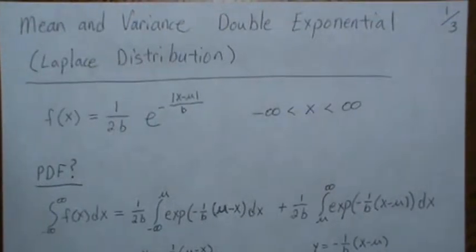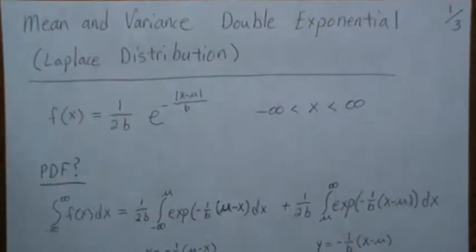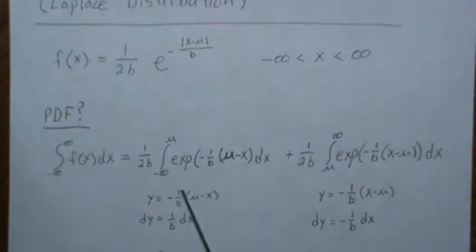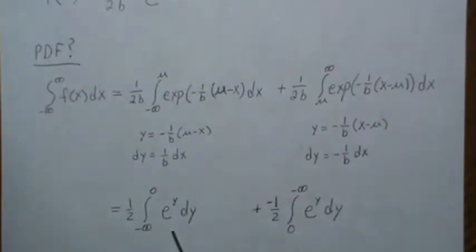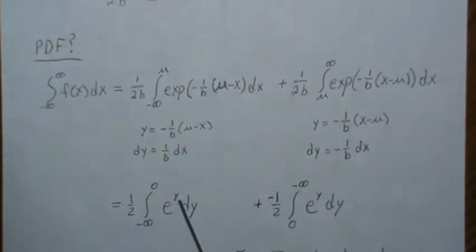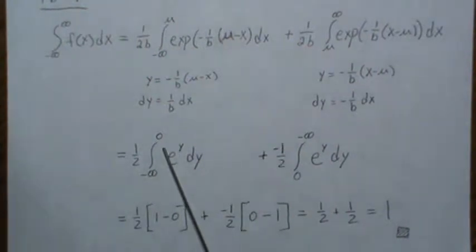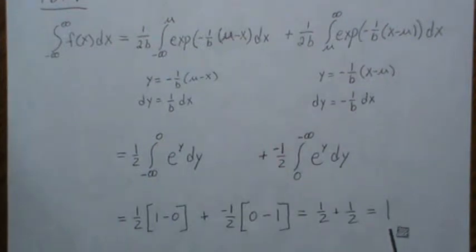We make a substitution y equals negative b times (mu minus x) for the first integral; differentiating gives us dy. For the second integral it's similar but with x minus mu. Substituting in, we integrate and get e to the y back, plug in the values, and get one half plus one half which equals one. So it does integrate to one.